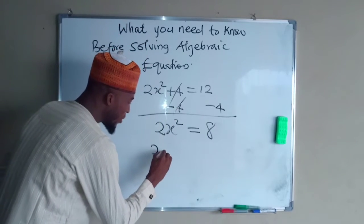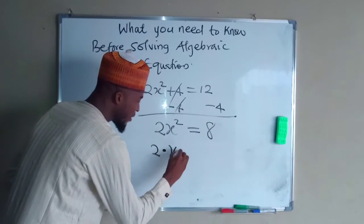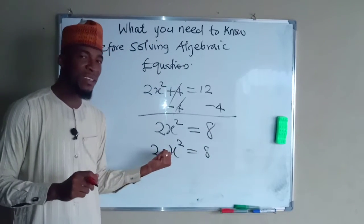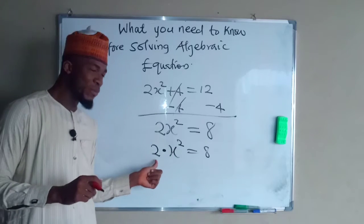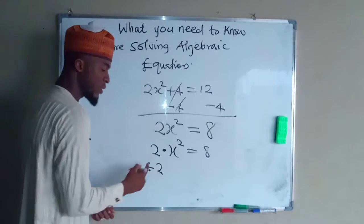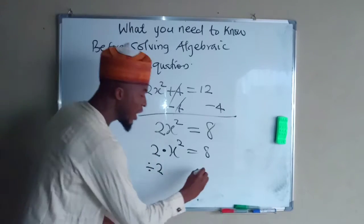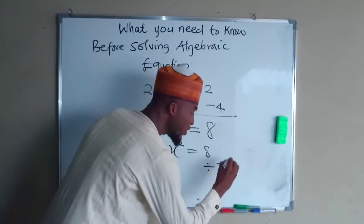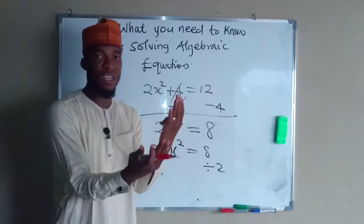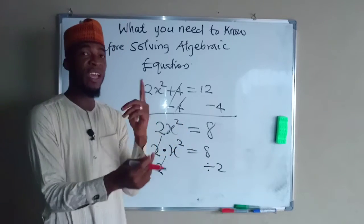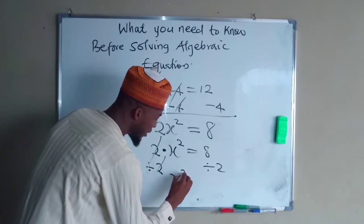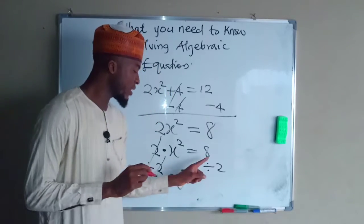So this means 2 multiplied by x squared equals 8. The opposite of multiplication is division, so to get rid of this positive 2, you have to divide both sides by 2. They are opposite to one another, so dividing by 2 will neutralize the 2 to become 1, and 1 times x squared is still x squared. So we have x squared on the left hand side.